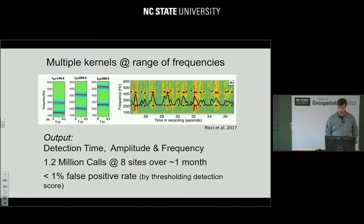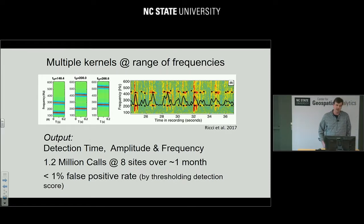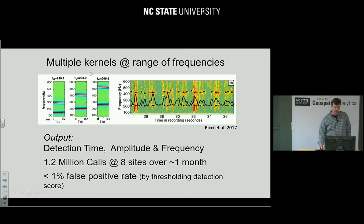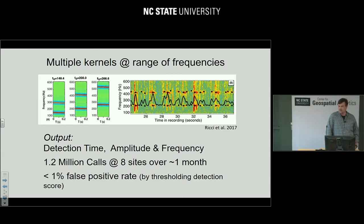The detection score shows peaks where toadfish calls are present. We do a really nice job picking out each call, getting quantitative information about time and amplitude. Because the frequencies of harmonics can change, we make a bunch of kernels spanning the range we need — about 30 total, with fundamental frequencies from 149 Hz to 266 Hz — and match all of them against the data to find which matches best. Now we get not just detection time and amplitude, but also the frequency of the call.